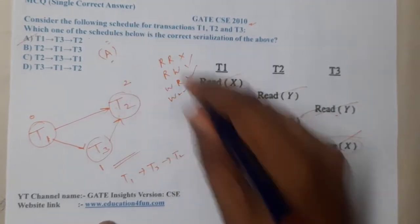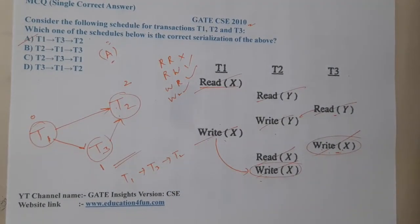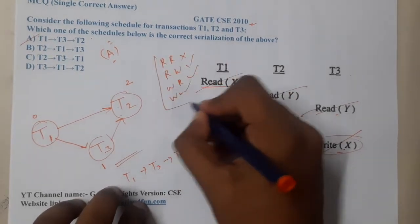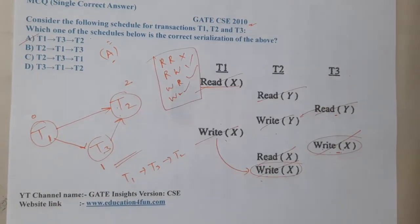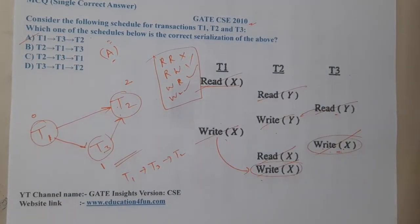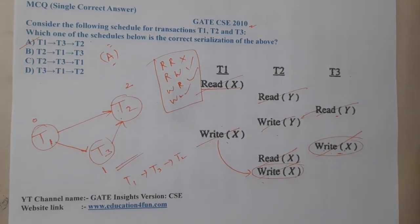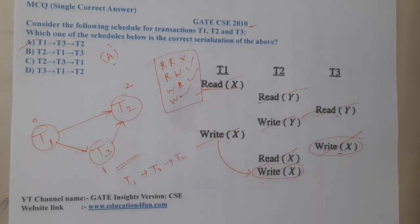These questions are really easy — the only things required are drawing the precedence graph and identifying the topological order. Remember: whenever you see a write, it's a danger; read-read clashes are never an issue. I hope everyone got a clear idea. See you in the next lecture!